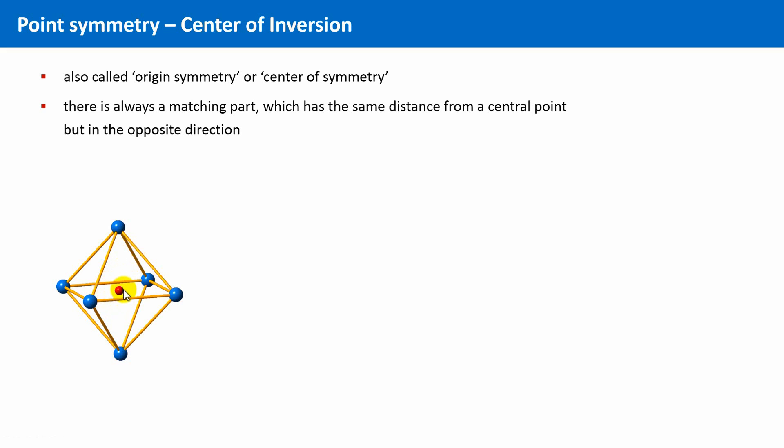but also this inversion symmetry. And this means every two pairs of points of this octahedron have the same distance from this center but lie in opposite directions. The octahedron is perhaps not the best example because of its high symmetry. Let's look at an example which only has origin symmetry.